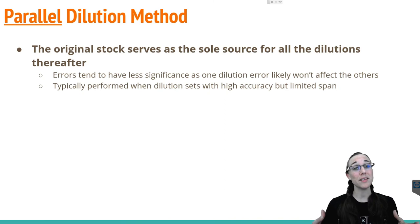In the second way to make a dilution set, you'll use a parallel dilution method. This is where the original stock serves as the sole source for all the dilutions thereafter. The errors here tend to be less because you're not propagating them throughout. It's not like one error multiplies into the next set itself. These have better accuracy, less error, but for a limited span because it's pretty labor-intensive to keep going back to the original stock and doing a bunch of different calculations for each dilution set as you go through.